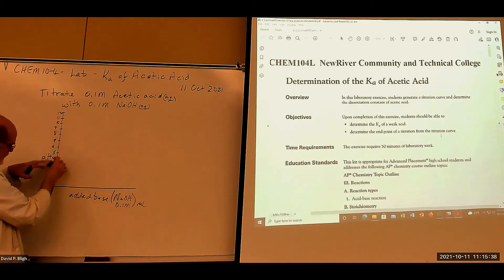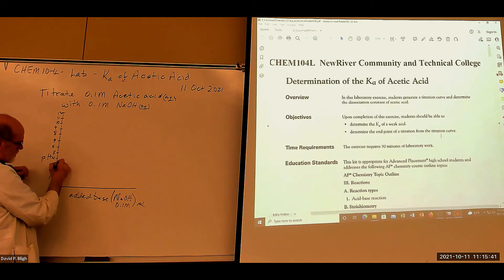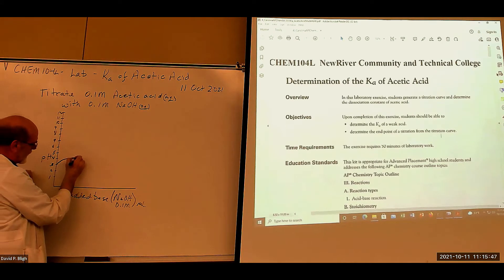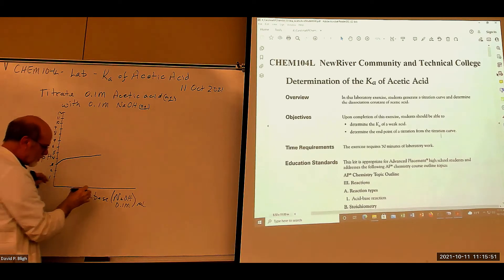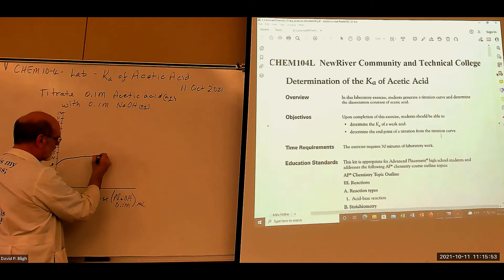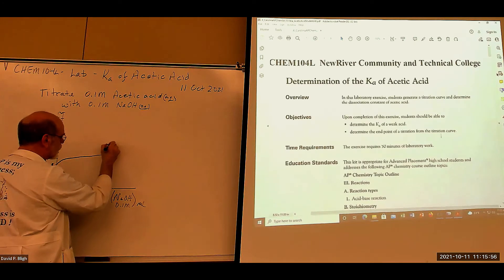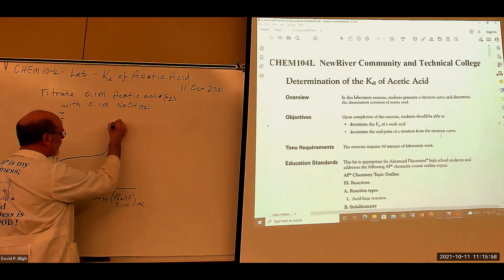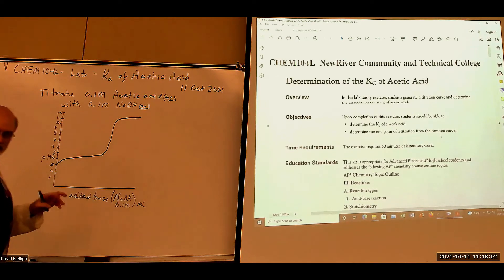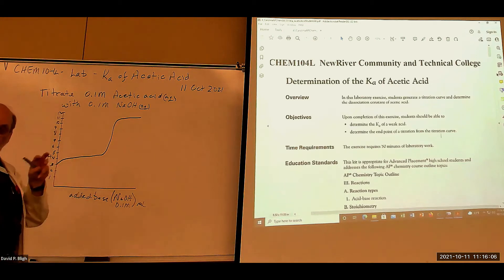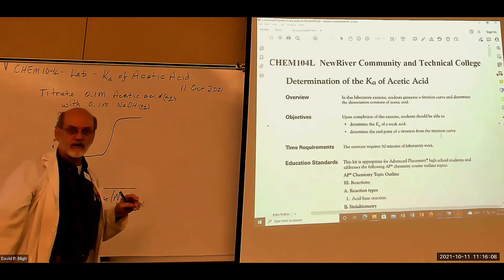We're going to start off down here at a low pH, and it's going to give you a boost of pH in the beginning. Then it's going to sort of flatten out. Then you're going to reach a certain amount of base where you're close to the equivalence point and it's going to shoot way up, then at some point it's going to level off. That's the general form — what's called in the sciences a sigmoid curve, looks like an S.